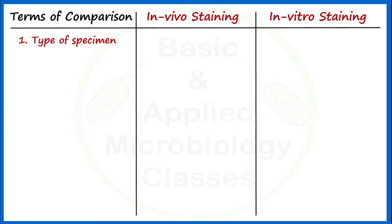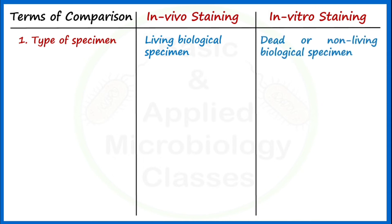In the case of in vivo staining, a living biological specimen is examined — that can be any type of cells or tissue. In the case of in vitro staining, a non-living biological specimen is examined.